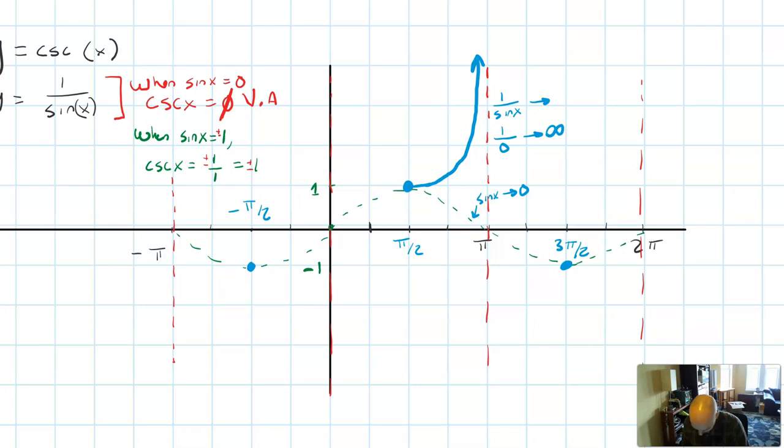Think about the sine graph getting smaller, which means its reciprocal has to get larger. Now if we travel backwards, it seems true that the same thing will happen. Down on the other side, we're gonna have the same thing happen.